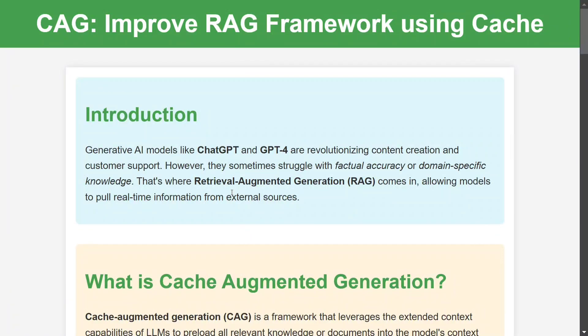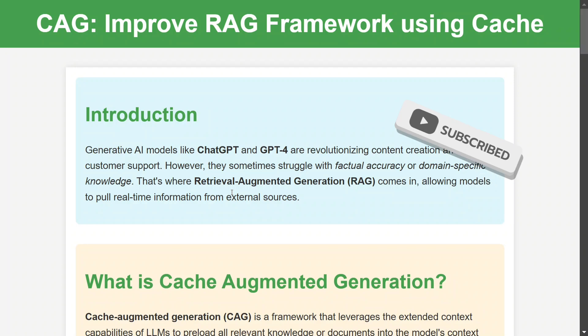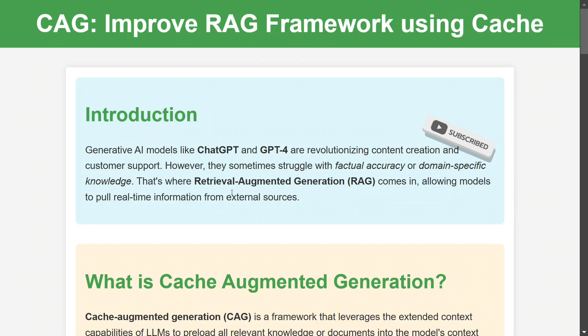Hi everyone, today we will be discussing CAG, that is Cache Augmented Generation, which is an improved version of the RAG framework. It helps you talk to your external documents using an LLM and is blazing fast. CAG is creating quite a buzz right now because it is faster than the RAG framework and requires only minor mechanism changes.